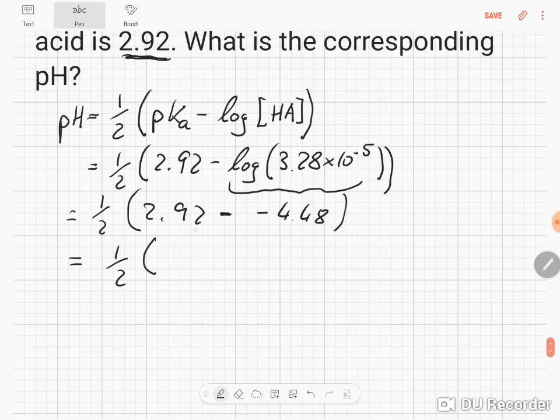That gives 2.92 minus negative 4.48, which equals 7.4, and half of that gives us a pH of 3.7. So that's the pH of this weak acid.